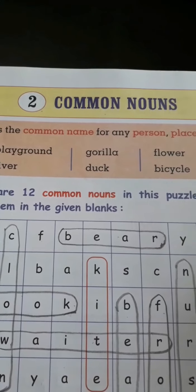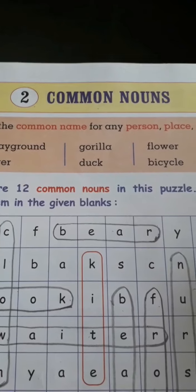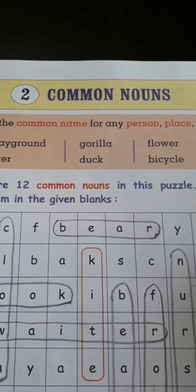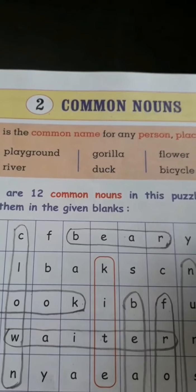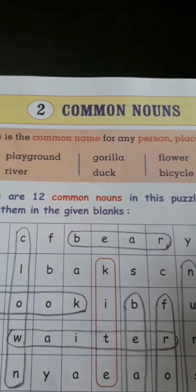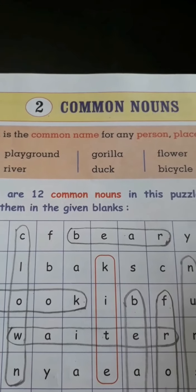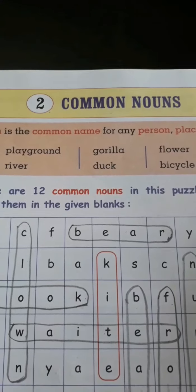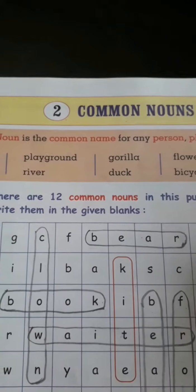What is a noun? Noun is the name of a person, place, animal, or thing. What is a proper noun? A proper noun is the special name of a person, place, animal, or thing. And it is always written with a capital letter.